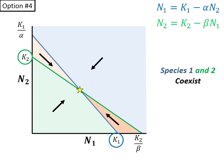Once here, because we are on both isoclines, neither population will grow any further, and they will stabilize at this equilibrium density. Note however that the final density of each is lower than the carrying capacity of either. This is the only scenario in which competitive exclusion does not occur.